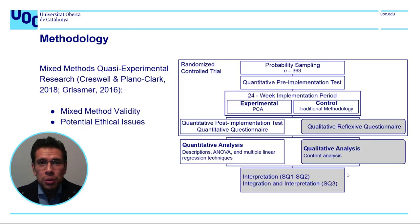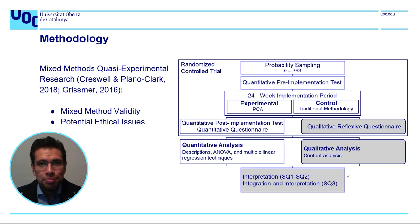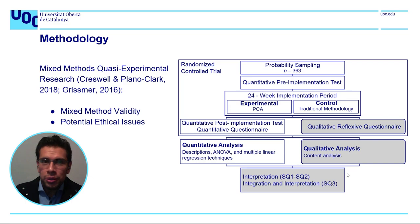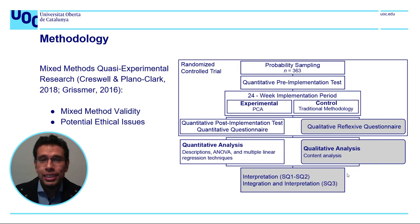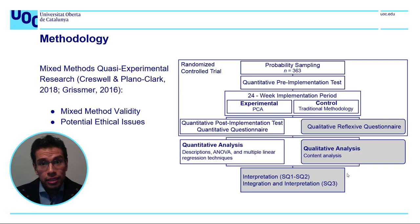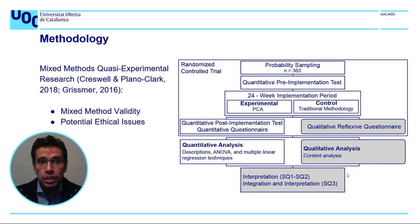The research will be a mixed method quasi-experimental convergent design. It will collect and analyze both quantitative and qualitative data and will integrate the information within a quasi-experiment. The research will collect a qualitative component during the randomized control trial, with the purpose of understanding the processes and experiences of the experimental groups.